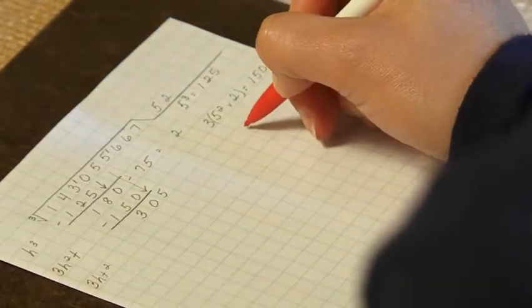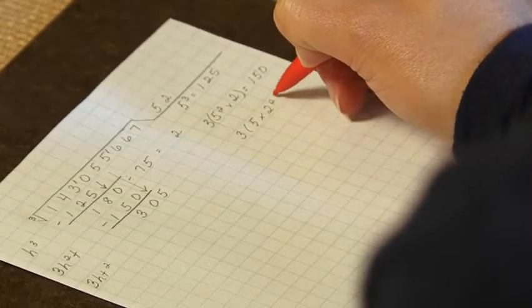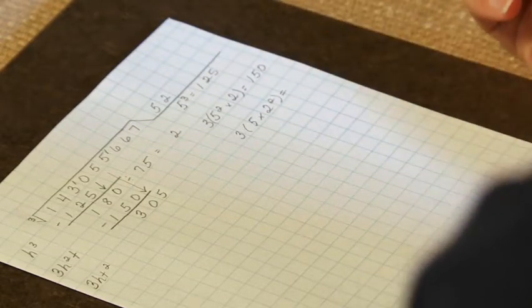So we have 3 times 100 times 10 squared. So we have 5 times 2 squared, 3 times, and that equals 60.